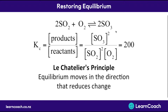Whereas if we added a whole lot more product — a whole lot more SO3 — equilibrium would again move in the direction to reduce the change. So it would move to the left, producing more reactants to get rid of some of the product, ultimately trying to get the number back to the original 200. So: if you add more reactants it moves to create more products; if you add more products it moves to create more reactants.